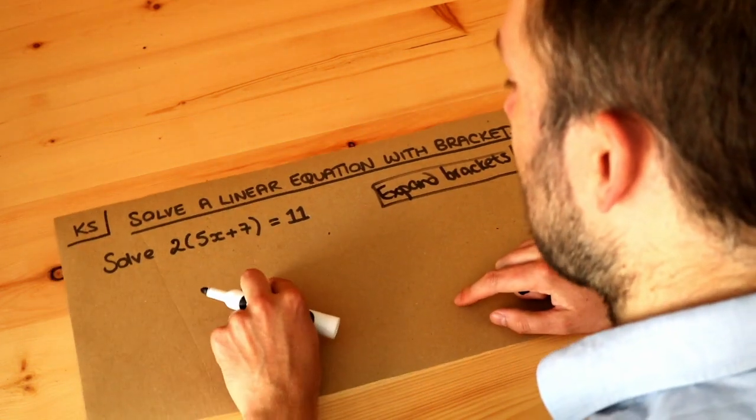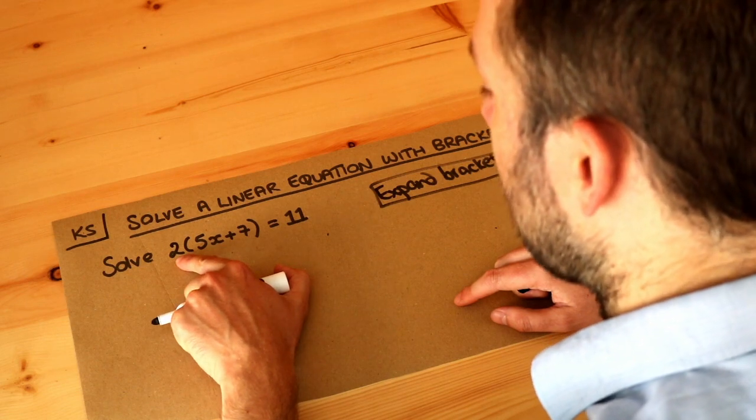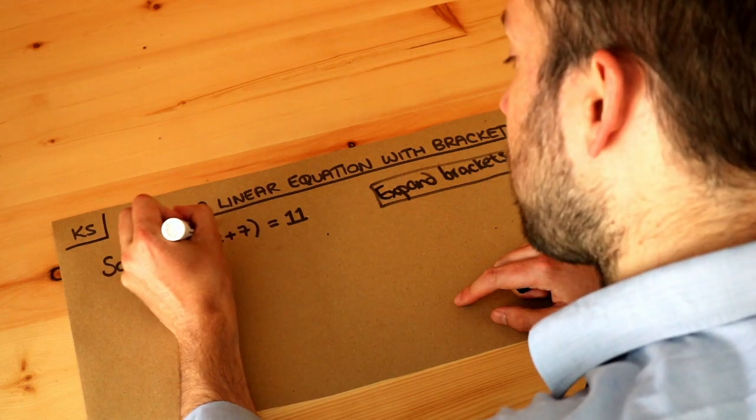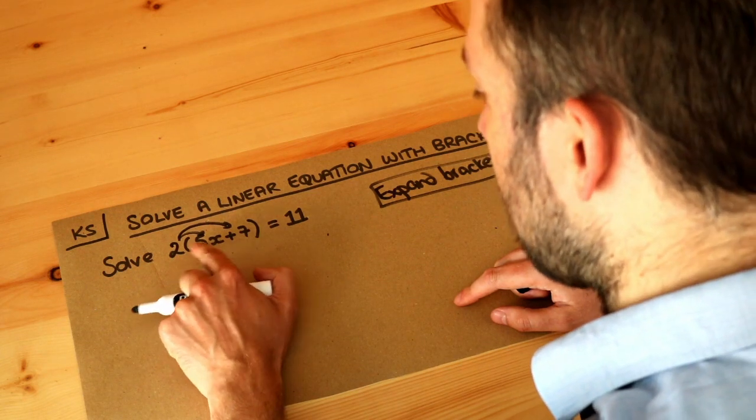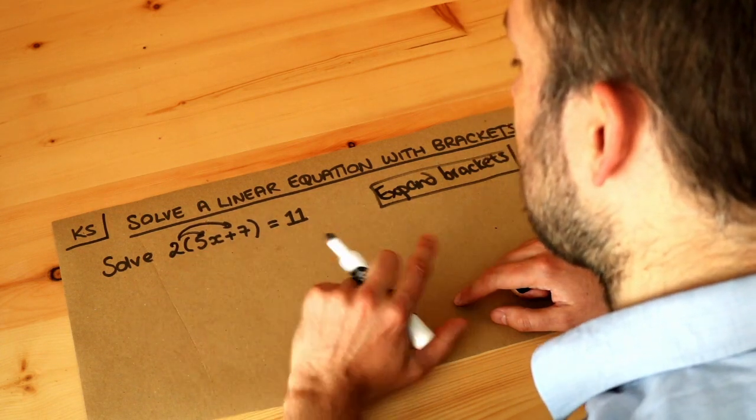To expand brackets, we multiply the thing in front of the bracket by each of the things inside the bracket. So we do the thing in front times the first term and the thing in front times the second term.